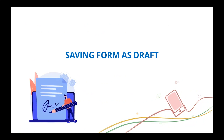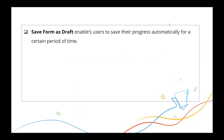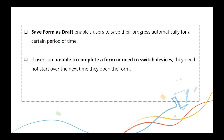Starting with Save Form as Draft. The form is one of the important components in Creator, acting as the main interaction point between the user and the application. If a user wants to save data they've entered and return to it later, or if they need to switch between devices — for example, from mobile to web — the Form Save as Draft feature allows them to save their progress and resume it after a particular period of time.